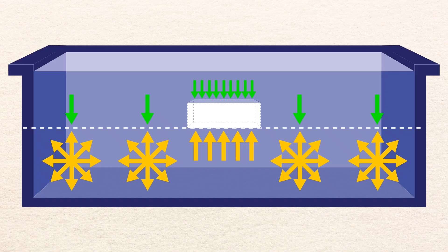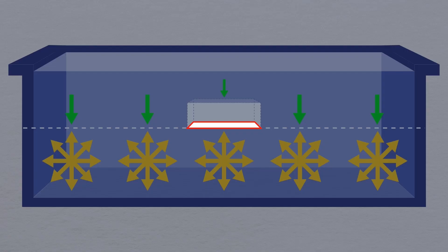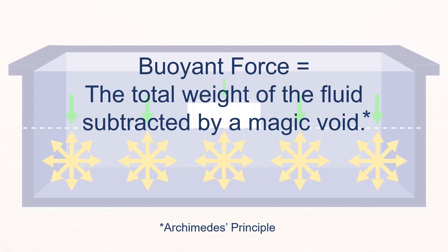Remember that this pressure difference operates on every point along the length of the void. So, to get the total magnitude of the buoyant force, you need to multiply the pressure difference by the cross-sectional area of the void, shown here. And since the pressure difference is caused by the absence of water weight, this means that the buoyant force always equals the total weight of the fluid removed by a void. This is known as Archimedes principle.